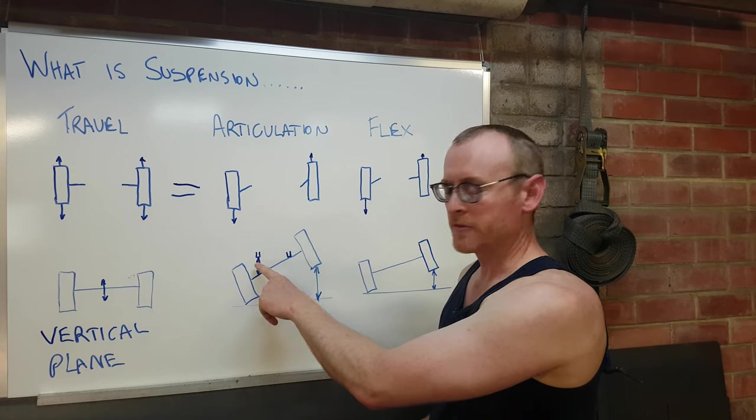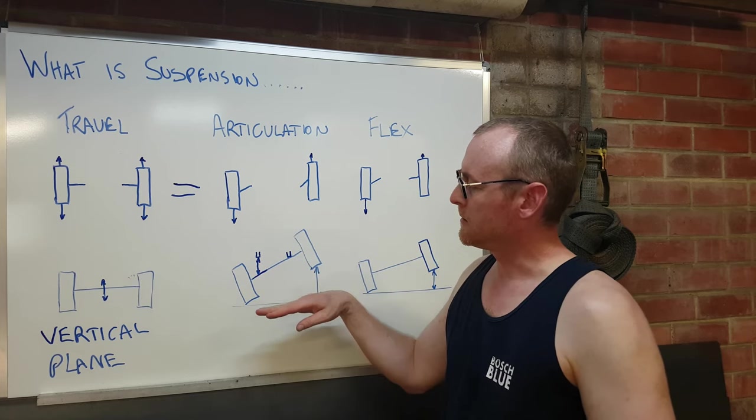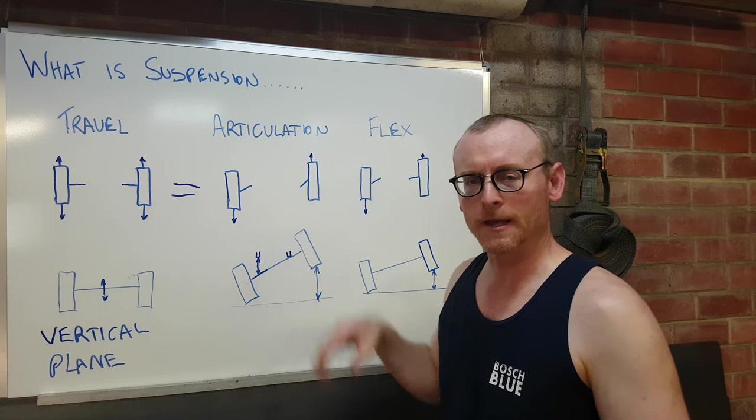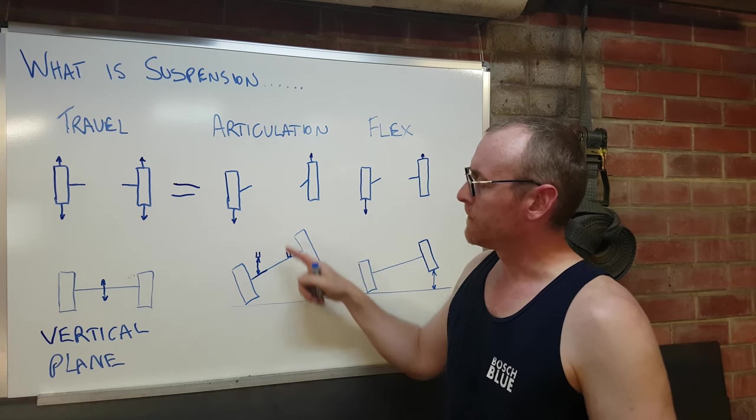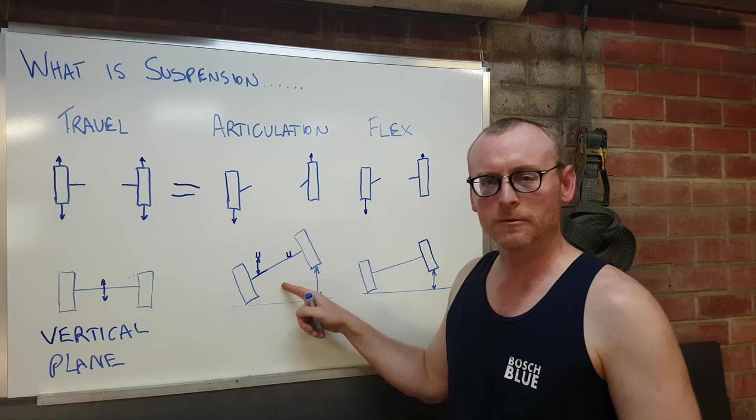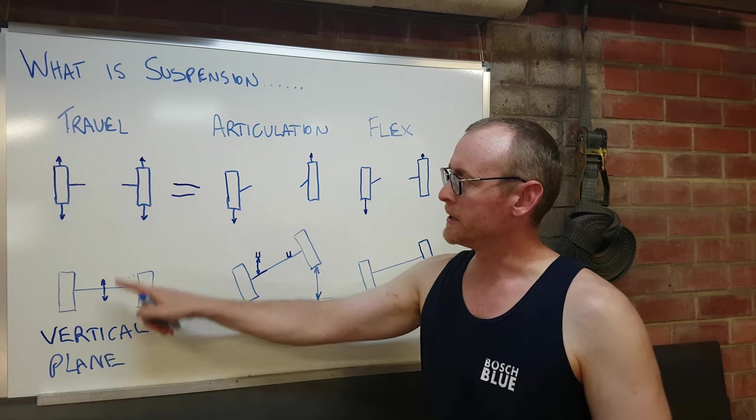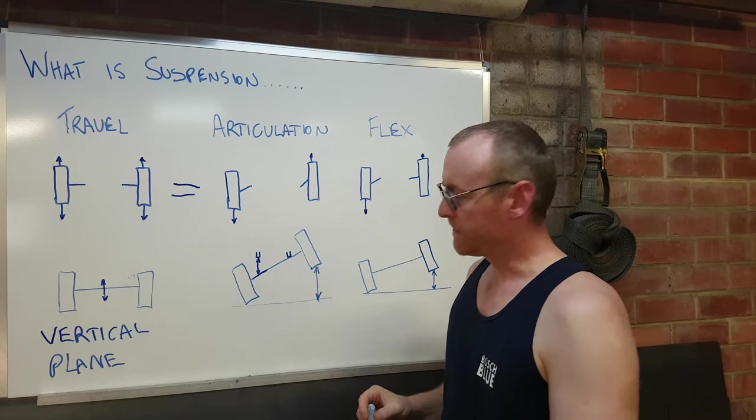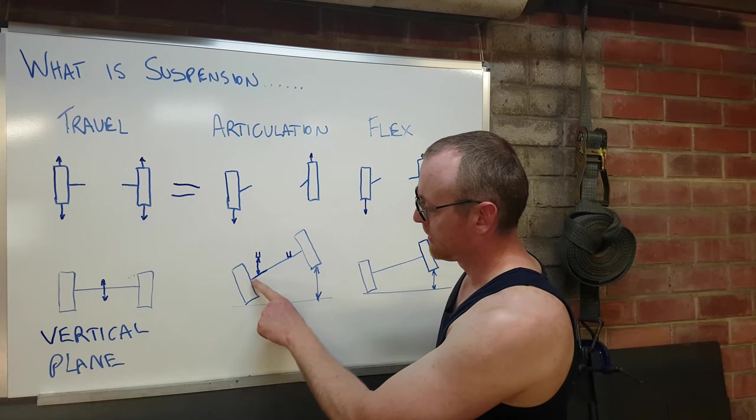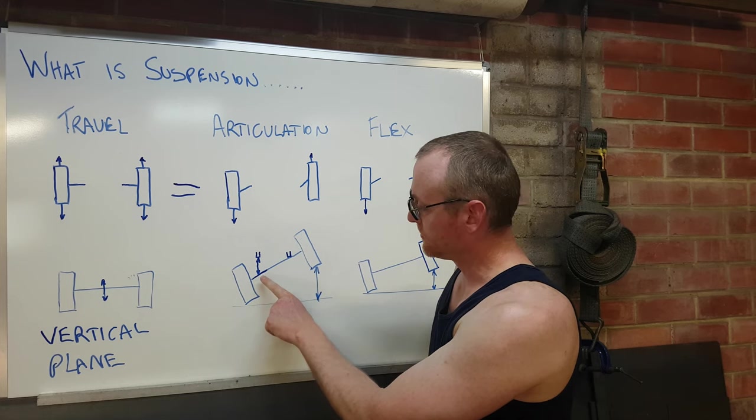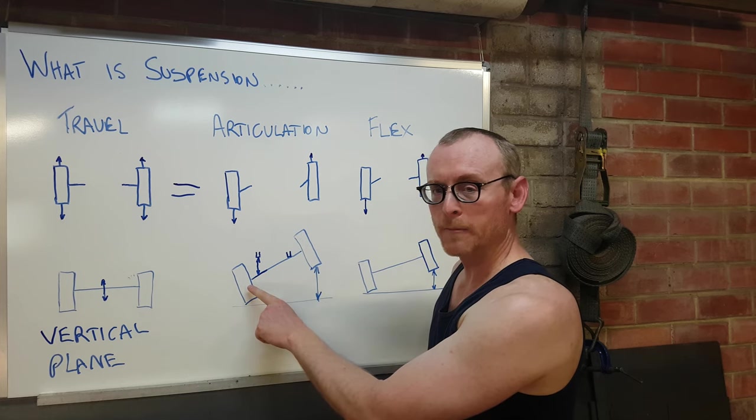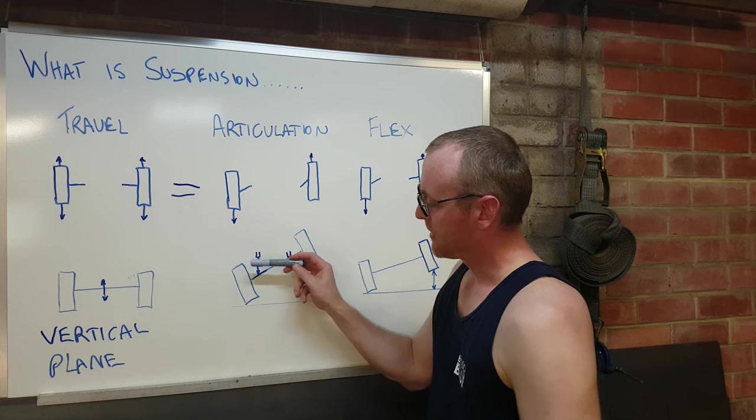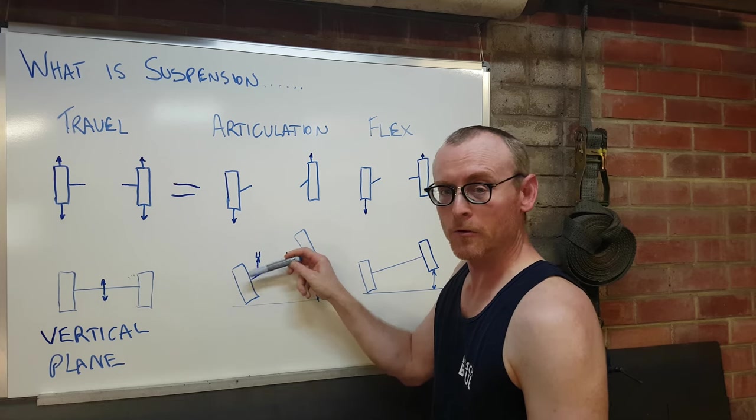These are the bump stops here. Now the angle the axle has articulated. Now for articulation with the solid axle, you get more than you get with the travel in a solid axle. The reason for that is this part of the axle beyond that vertical plane has been thrown downwards, so you get a bit more.